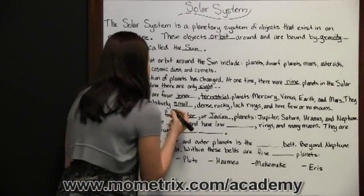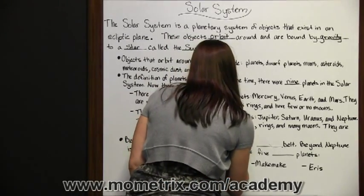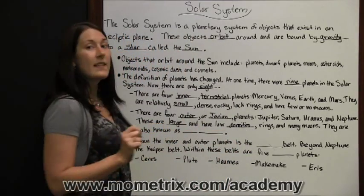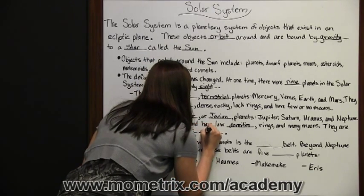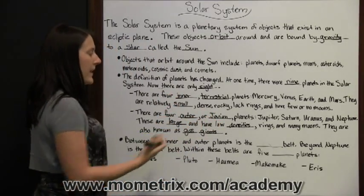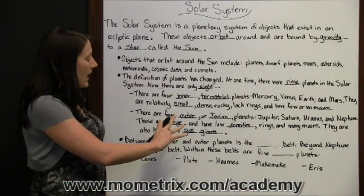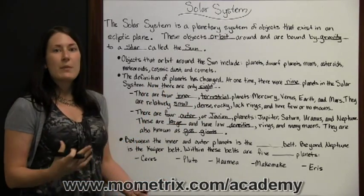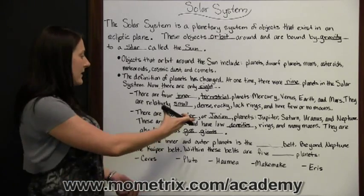These planets are large and have low densities — they are not as dense as the inner planets. They do have rings and many moons. They are also known as gas giants, made up primarily of gas, which explains their lower densities even though they are very large.